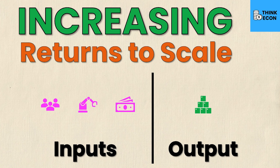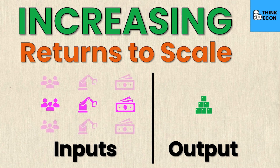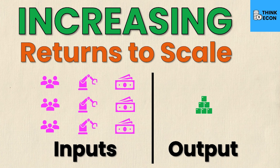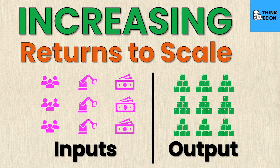We have another video on economies of scale, so if that's something you're interested in check it out. For this one, let's suppose that we triple all of our inputs — three times as many inputs, just like the last two examples. Well, in increasing returns to scale this will lead to a more than triple output. You'll see nine times the output even though I only tripled my input — and that's because I'm experiencing increasing returns to scale.